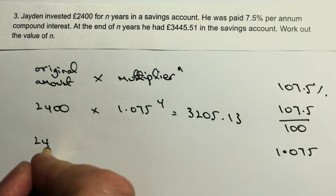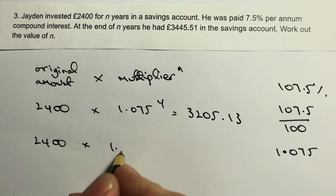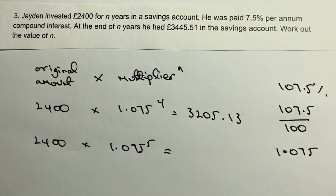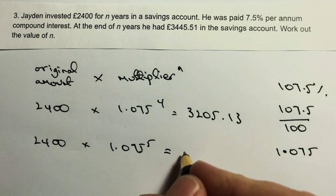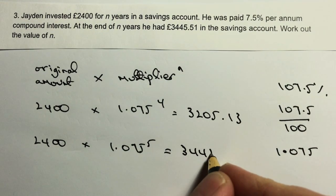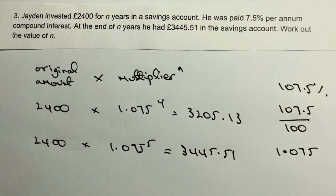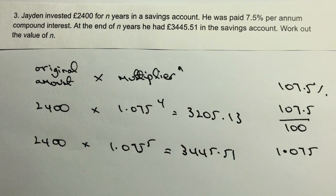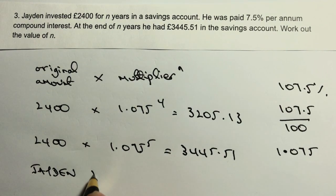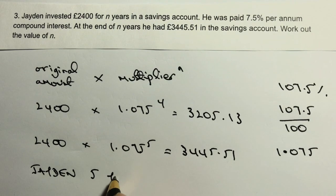This time I'll try five years. Feeding that into my calculator gives £3445.51, which answers the question. So Jaden invested for five years — that's the value of N.